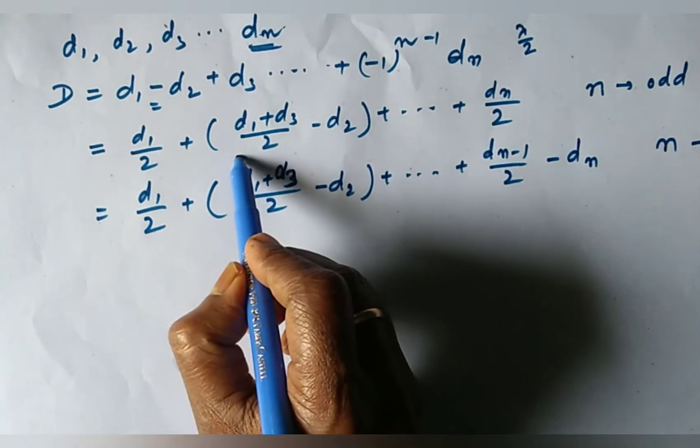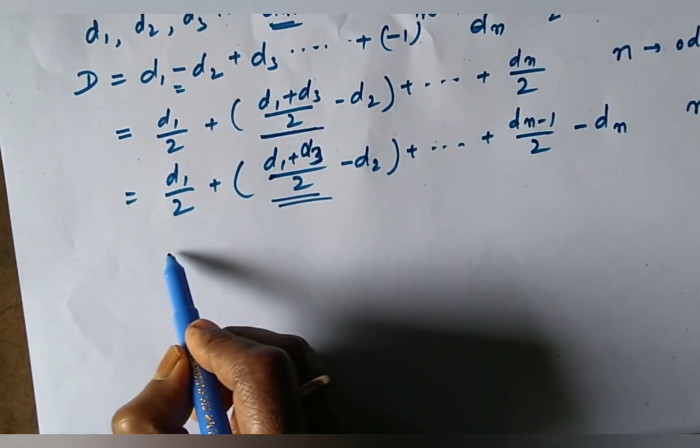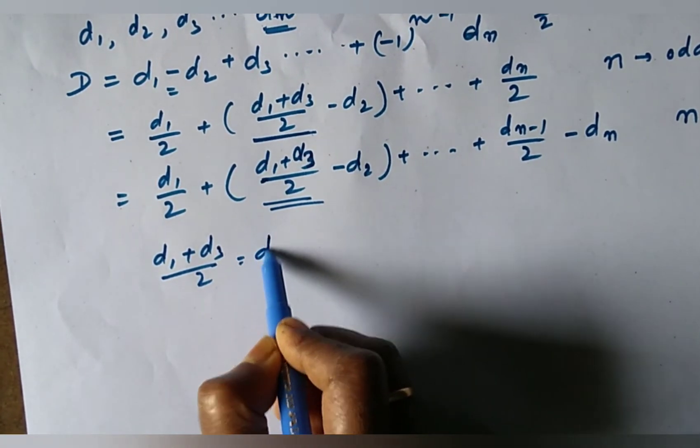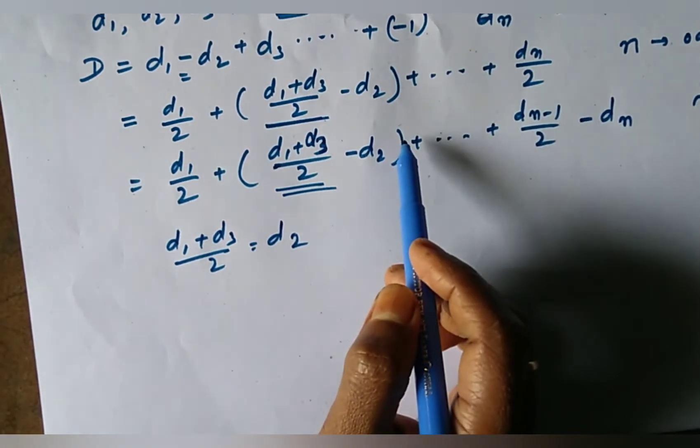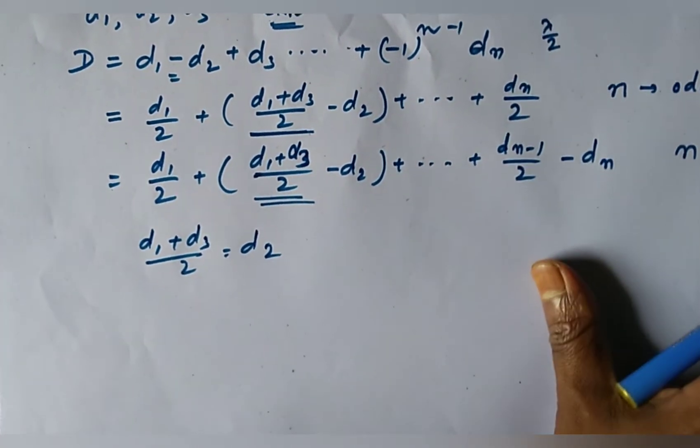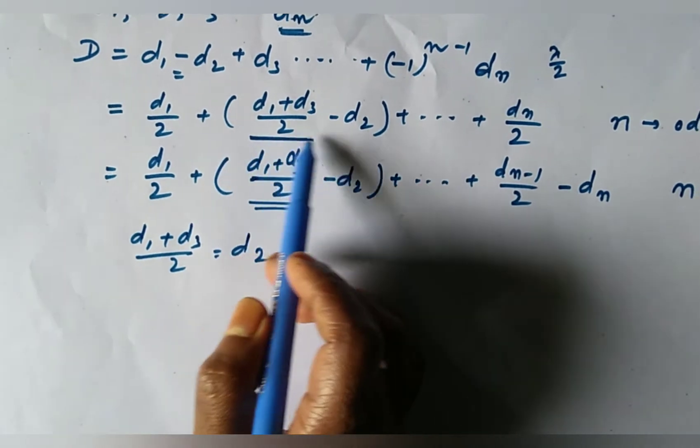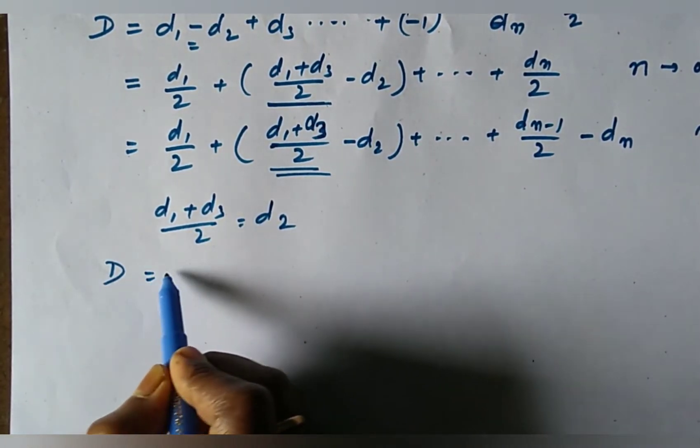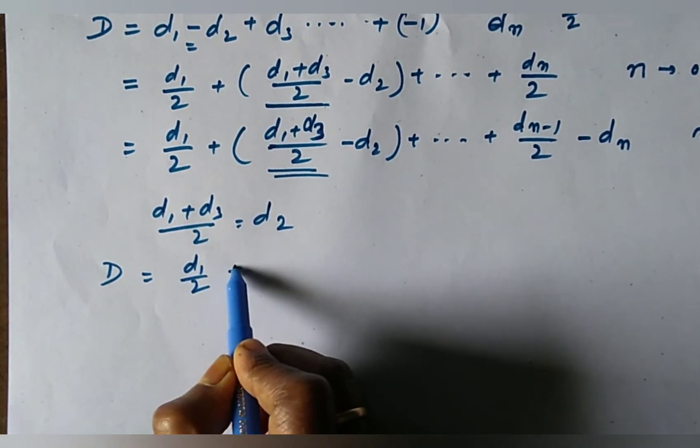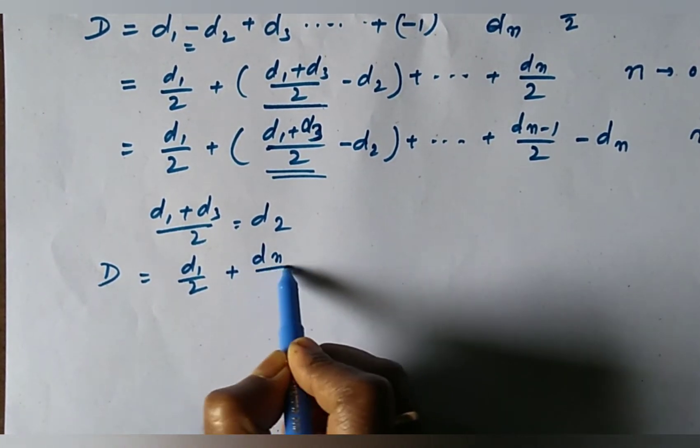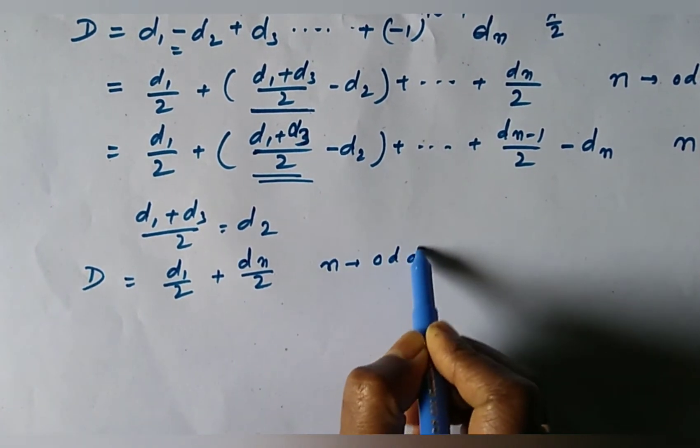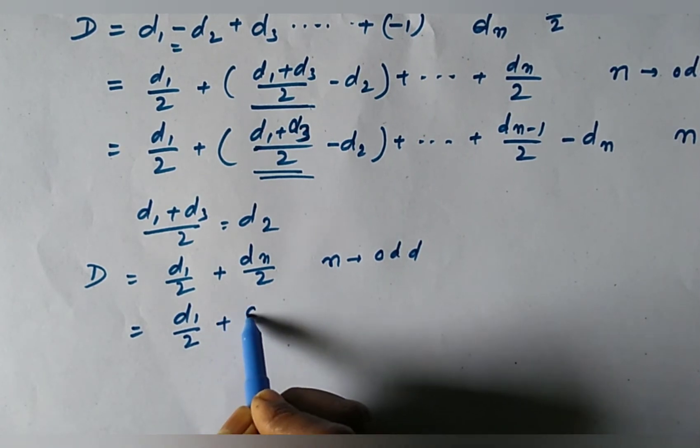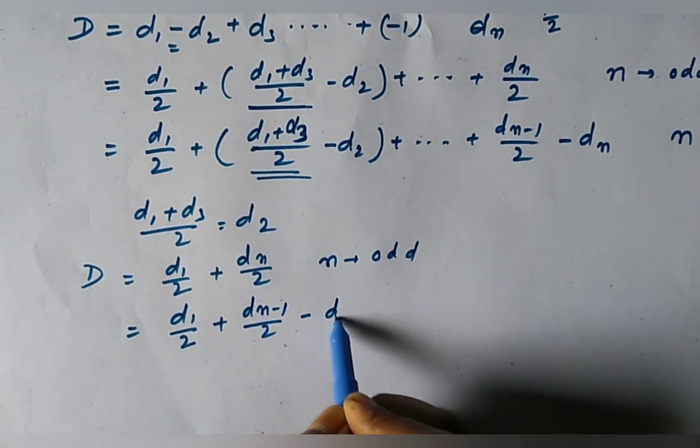But actually, this and this is equal to D3 by 2 equals D2. Then we may simplify the term as D equals D1 by 2 plus Dn by 2 when n is odd, and equals D1 by 2 plus Dn minus 1 by 2 minus Dn when n is even.